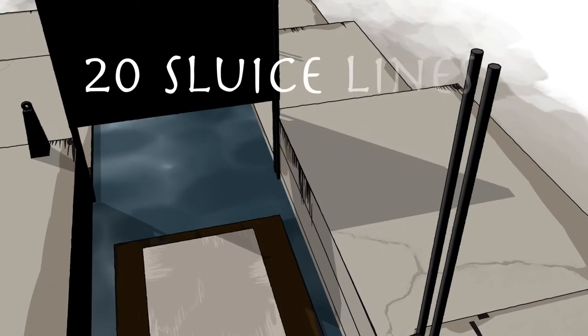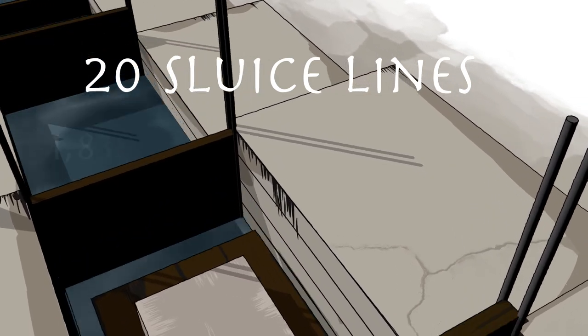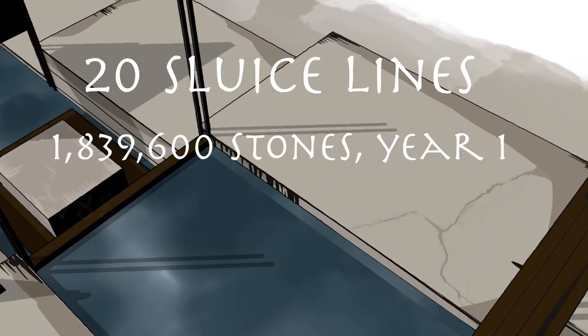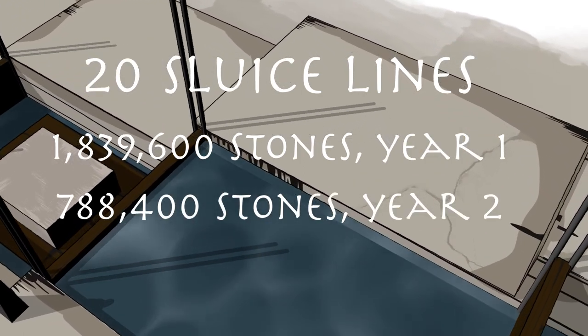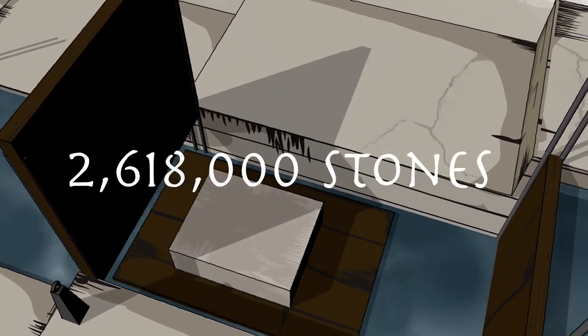20 water-powered sluice lines made it possible to raise 1,839,600 stones in the first year, and 788,400 stones during the second year of construction, totaling 2,618,000 stones.